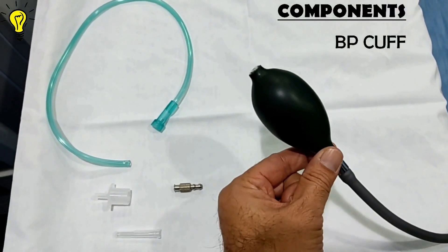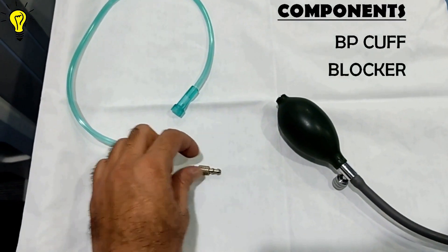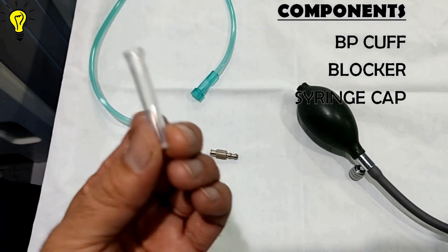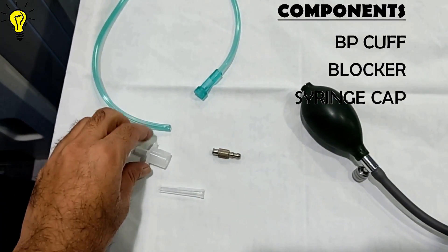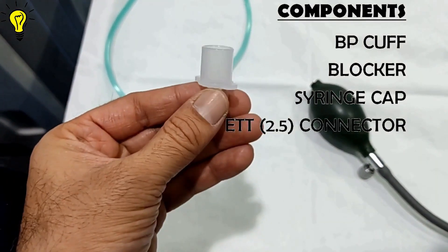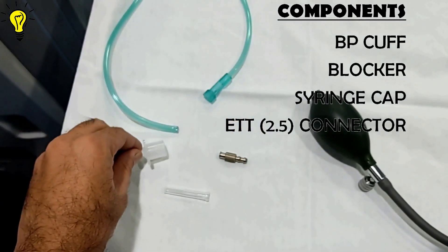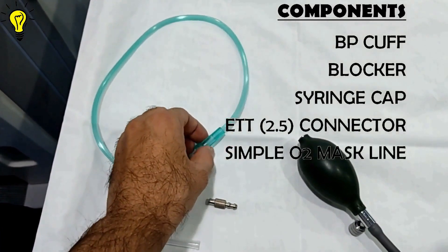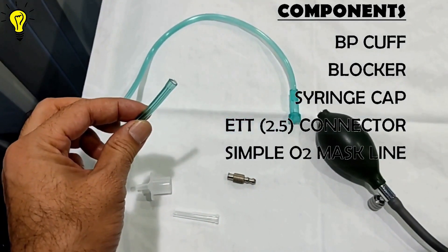The components you need include a BP cuff, a nozzle which is part of BP cuff, a blocker for the cuff on outer side and a simple needle cap, a connector from ETT size 2.5, and finally an oxygen line cut from a simple oxygen mask kit.